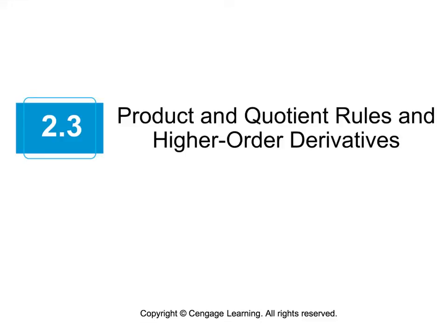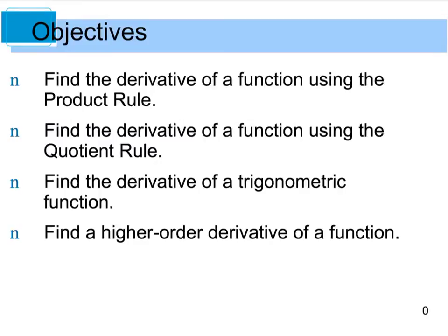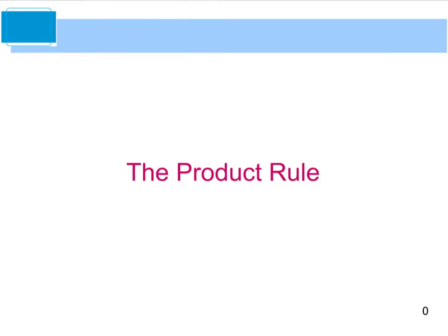Hello, and welcome back to Chapter 2. Today we're going to look at Section 2-3, which deals with product and quotient rules, and then tomorrow we'll look at the higher-order derivatives. So for today, we're going to look at the derivative of a function using what we call the product rule and the quotient rule, and then the trig functions and higher-order derivatives we will do tomorrow. So let's go ahead and get started with the product rule.